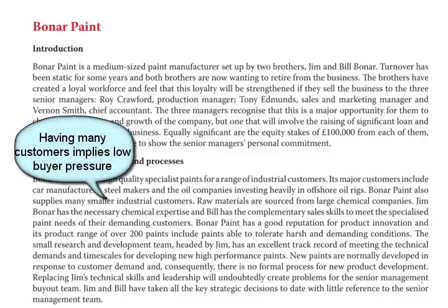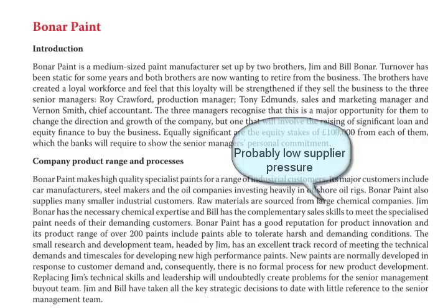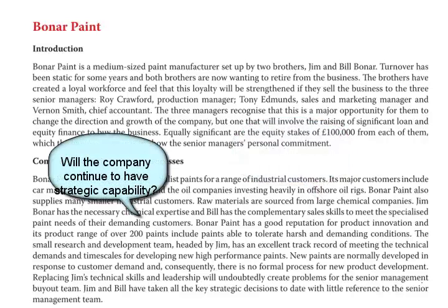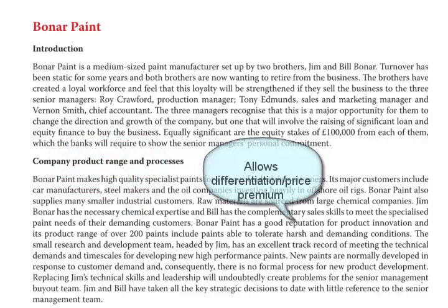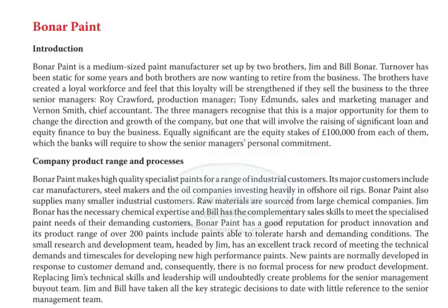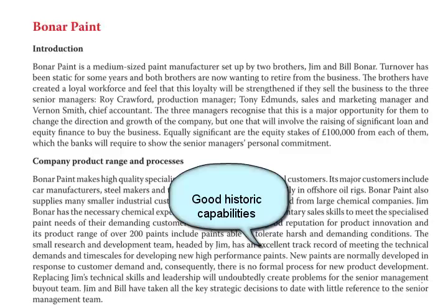We're told there are major customers such as car manufacturers and steel makers, and also many smaller industrial companies, implying relatively low customer pressure in terms of Porter's Five Forces. Raw materials are sourced from large chemical companies, so it's probably relatively low supplier pressure too. Jim Boner has the necessary chemical expertise, and we ought to worry about what happens when that expertise leaves when Jim retires. Bona Paint has a good reputation, implying a premium price and that a differentiation strategy has been successfully applied. They have an excellent track record in meeting technical demands and timescales, implying high capability — at least in the past — for strategic advantage.